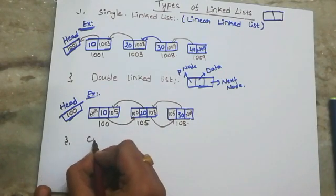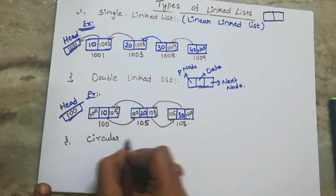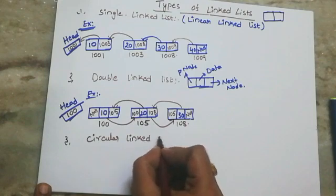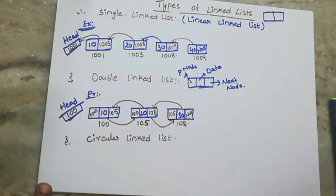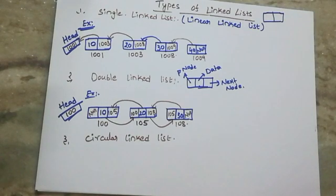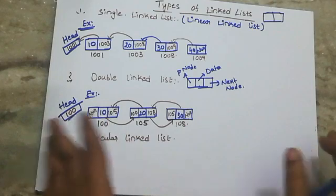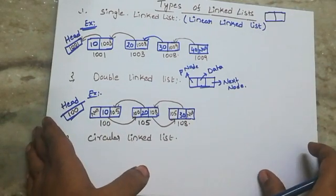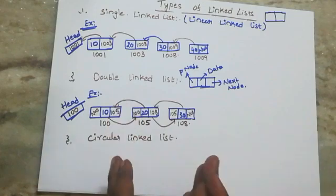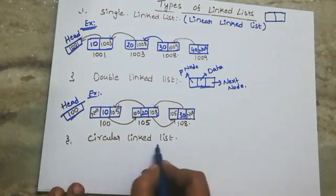The third type is the circular linked list. The circular linked list follows the same pattern as the single linked list. We will also do circular linked list — single linked list version.